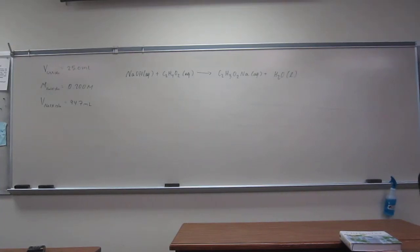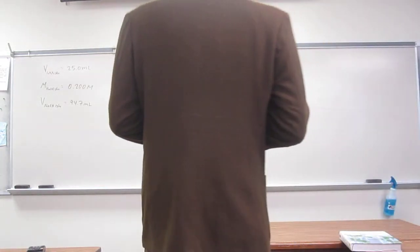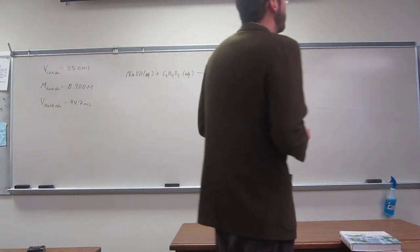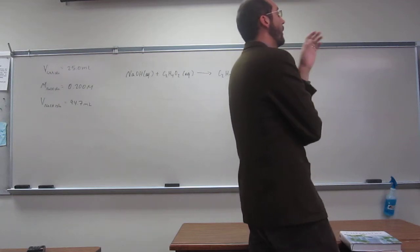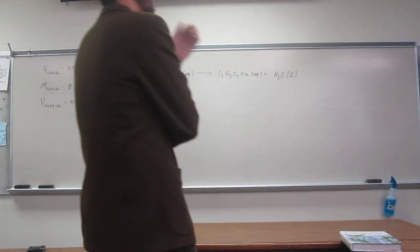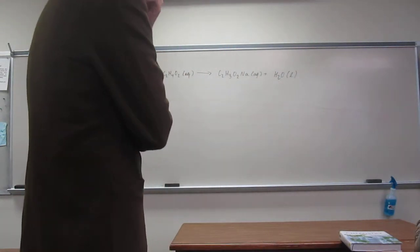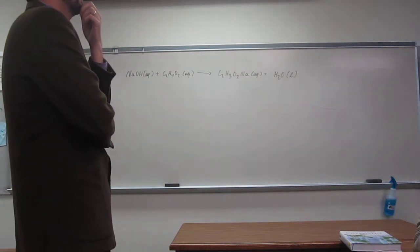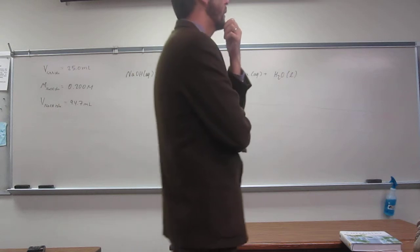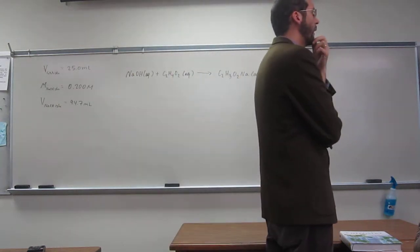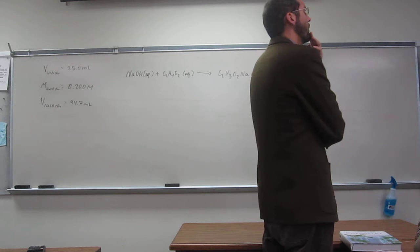Okay, so this one's a titration problem. I've recorded more titration problems, but this one's a nice one. It says a 25.0 mL sample of vinegar, which is dilute acetic acid, and then it gives you the molecular formula for vinegar, is titrated and found to react with 94.7 mLs of a 0.2 molar NaOH solution. What is the molarity of the acetic acid solution?